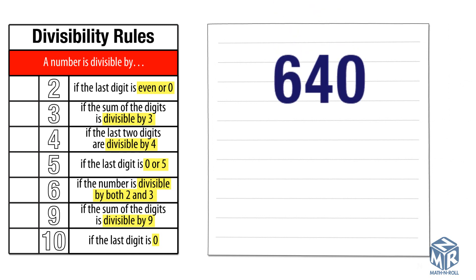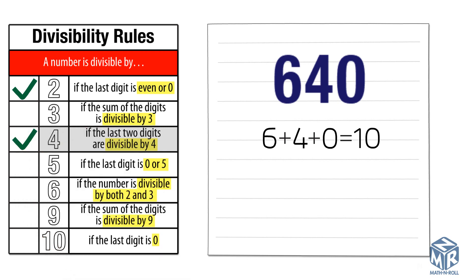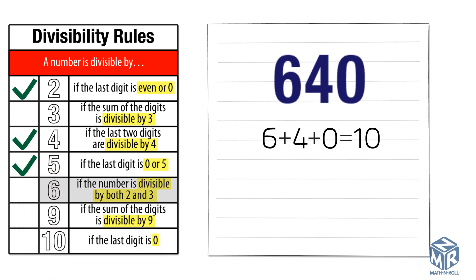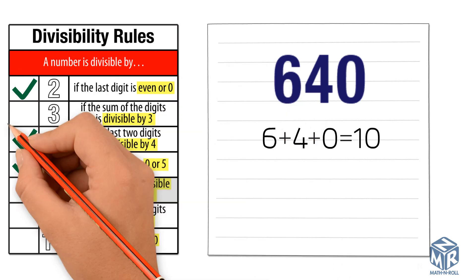Let's try another example: 640. Let's check if it's divisible by 2: the last digit is 0, so it is divisible by 2. Let's check if it's divisible by 3: the sum of the digits is 10, and 10 is not divisible by 3 without a remainder, so 640 is not divisible by 3. Let's check if 640 is divisible by 4: the last two digits are 40, and 40 is divisible by 4, so the number is divisible by 4. Let's check if the number is divisible by 5: the last digit is 0, so it is divisible by 5. 640 is not divisible by 6 because it was not divisible by 3.